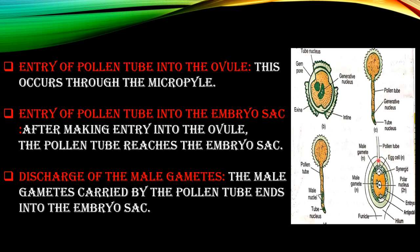Second is the entry of the pollen tube into the ovule. You can see the pollen tube entering the ovule, carrying the generative nucleus. Third, entry of the pollen tube into the embryo sac — when it enters the ovule, the pollen tube reaches the embryo sac. This internal region, called the embryo sac, contains polar nuclei and synergids. The male gametes carried by the pollen tube then enter the embryo sac, where fusion of male and female gametes occurs.